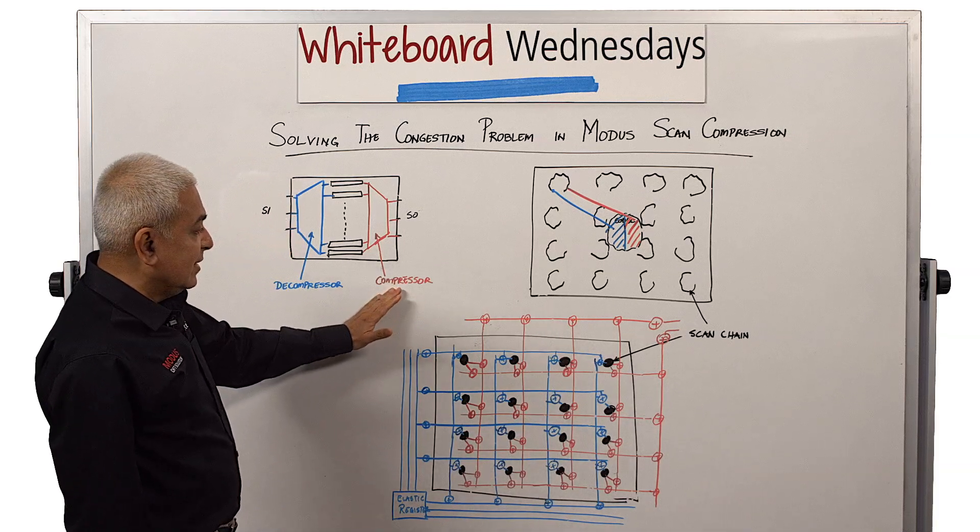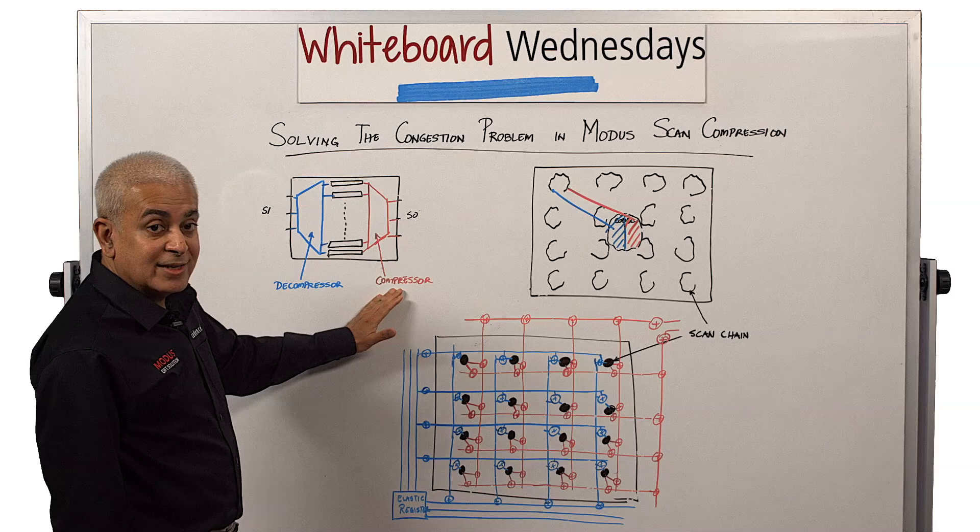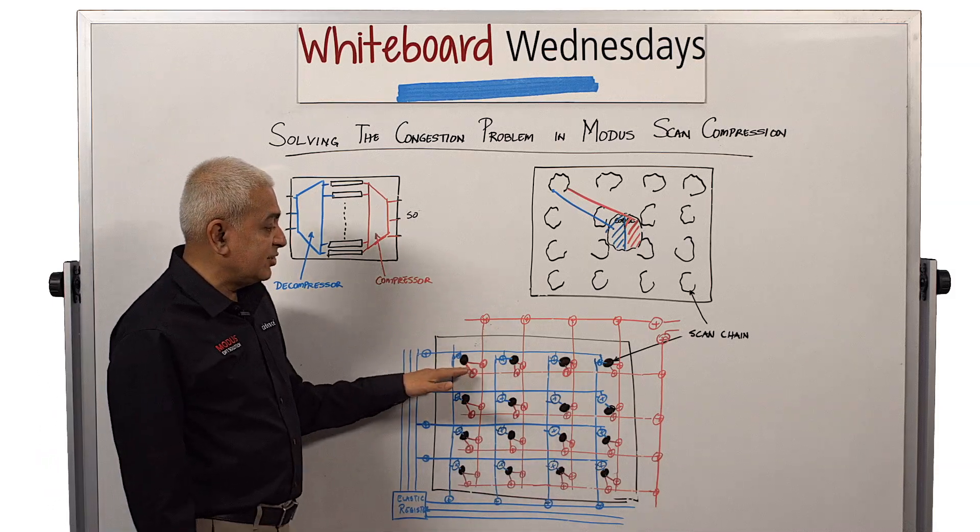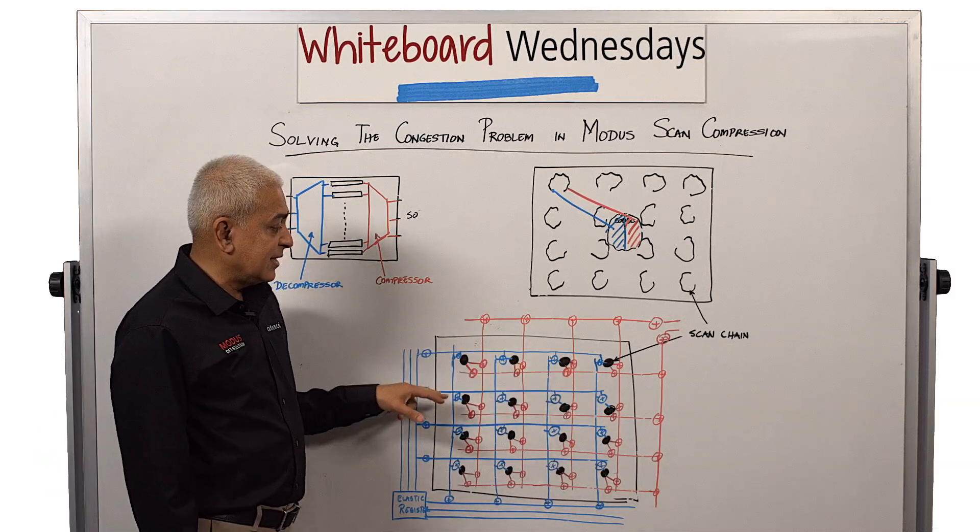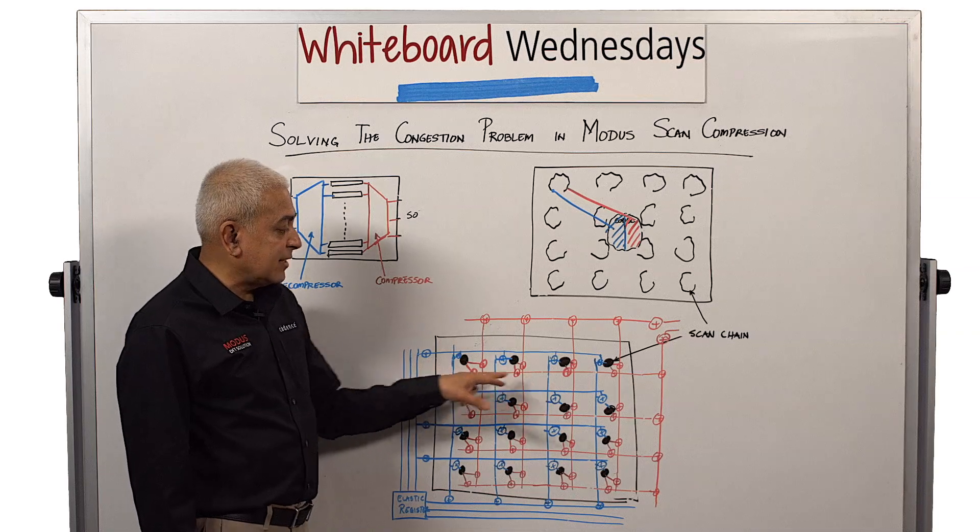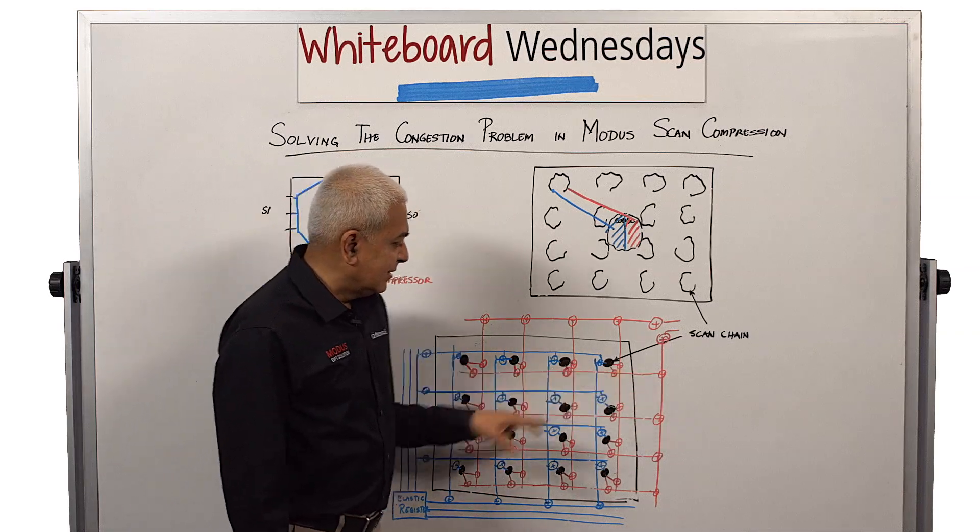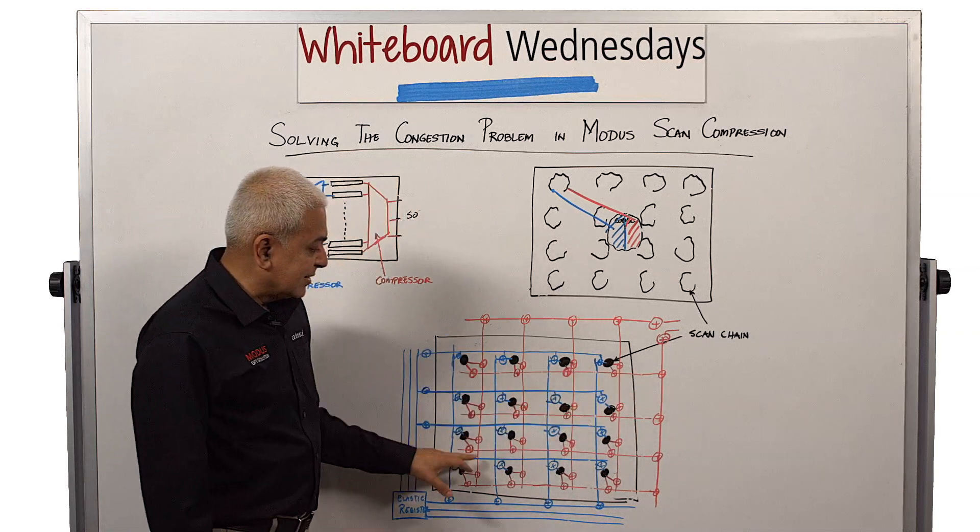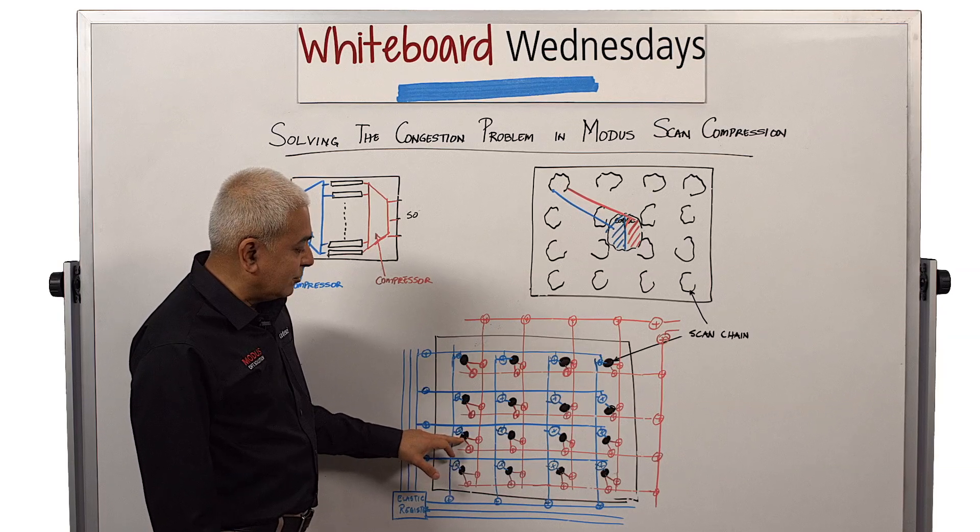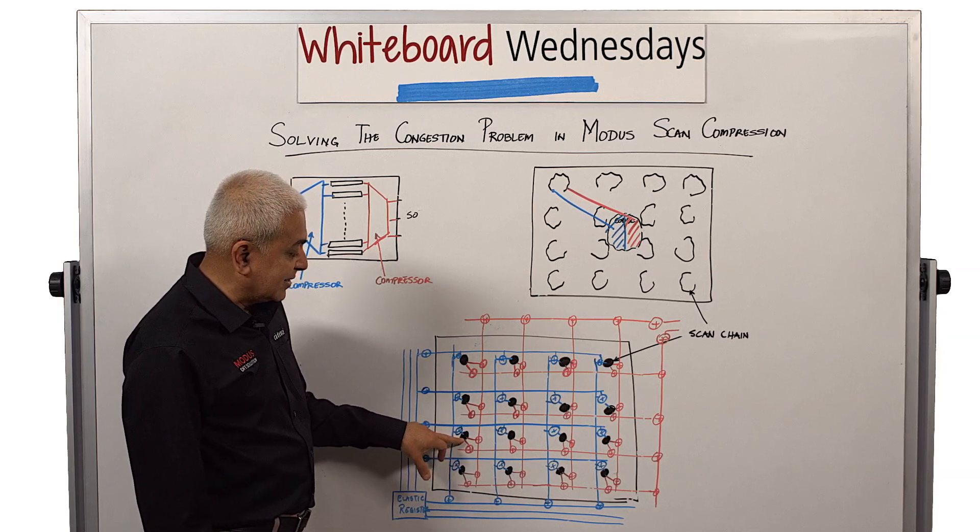On the compressor side, again, the XORs are created local to the scan chains that are distributed across the design. Their values are brought together along a grid line, as you see again, the red lines that bring together the values from a flip-flop or a scan chain here.